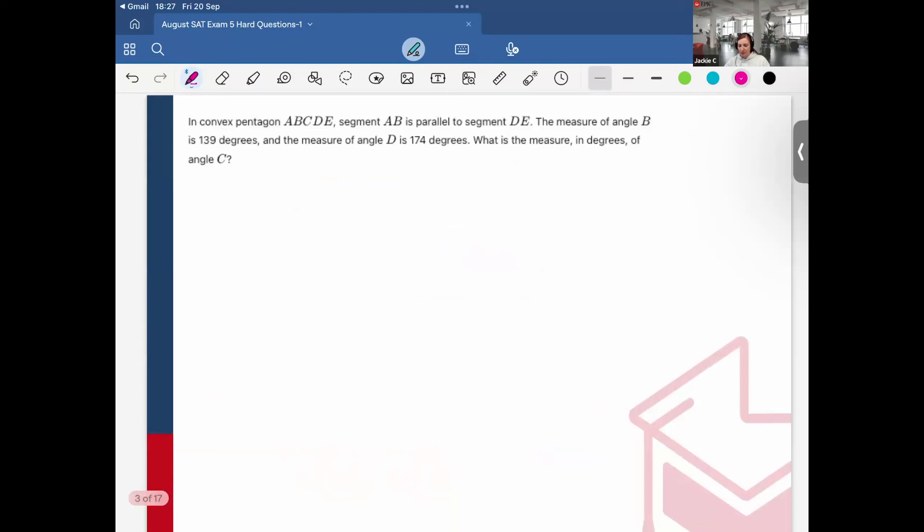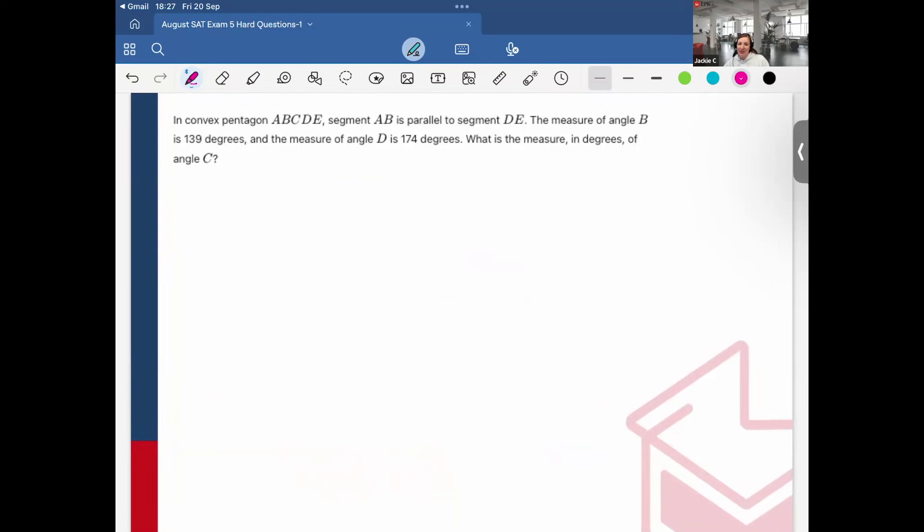In a convex pentagon ABCDE, segment AB is parallel to segment DE. I'm going to make these my parallel lines. Since it's convex, I would have A, B, C, and then D, E. We can see that AB is parallel to line segment DE. And the measure of angle B is 139 degrees. The measure of angle D is 174 degrees. What is the measure of angle C?